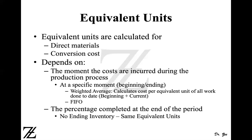Similarly, in a process costing system, material is added at different points in time in many companies. For example, take a beverage example like Coca-Cola. The first step is manufacturing the beverage — they add ingredients and sugar. Once the beverage is made, it goes through packaging, where they add the bottles, labels, and other packaging. So the material is added at different points in time; they didn't add all material right at the beginning. This drives both the cost and the equivalent units, depending on when costs are incurred in the production process.